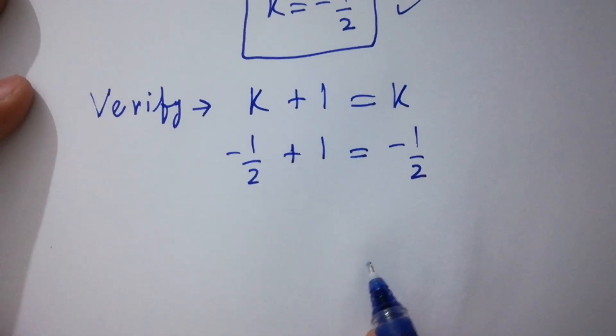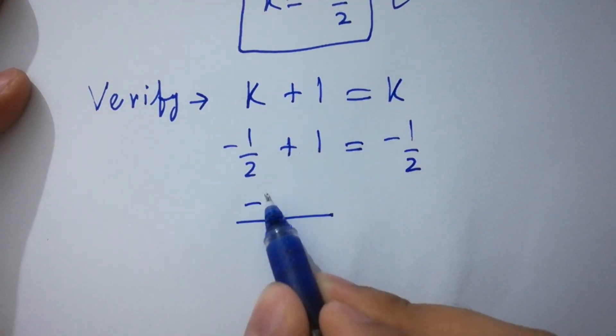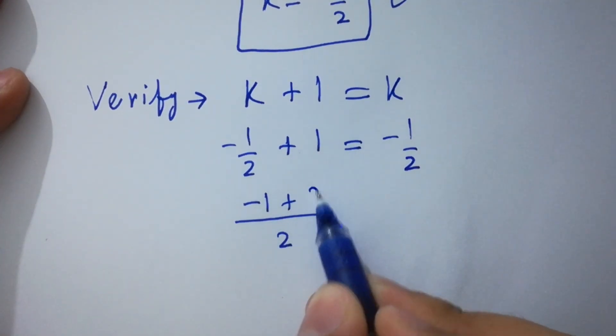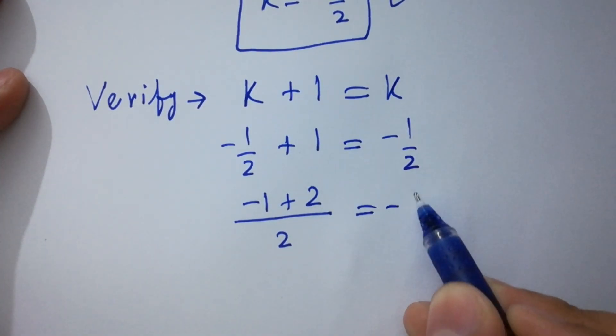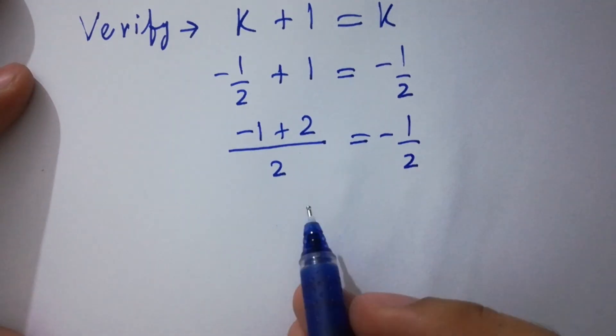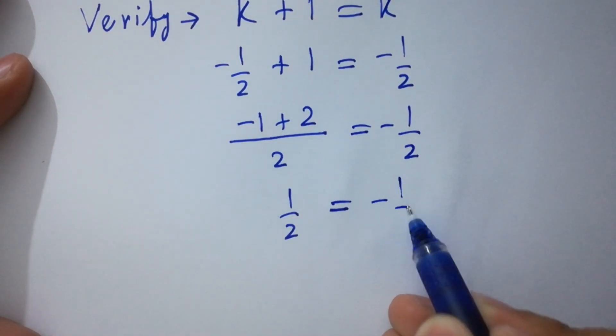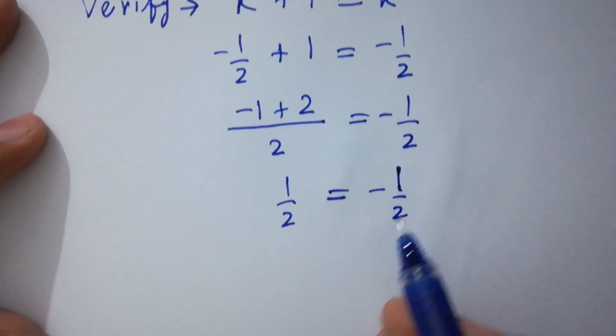Taking common denominator, we have minus 1 plus 2 over 2 equal to minus 1 over 2. 1 over 2 equal to minus 1 over 2.